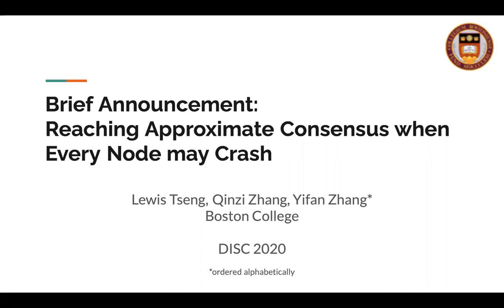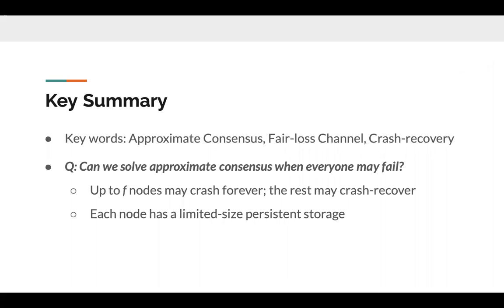Our research is about reaching approximate consensus when every node may crash. To give a brief summary, there are N nodes in our model, and we want to achieve approximate consensus. It is important to note that the model is asynchronous, and we assume eventual communication in delta units of time, as this will be important for later proof.